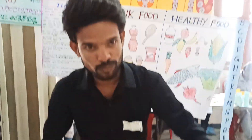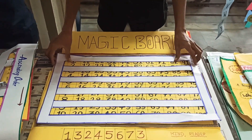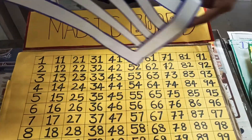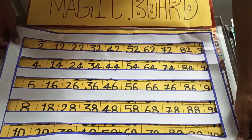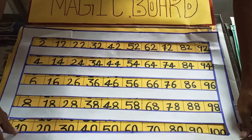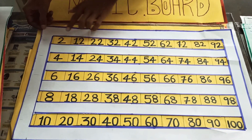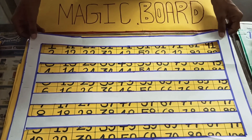Sir, it is a magic board. In this we have 1 to 100 numbers. If we see, those are even numbers. These are odd numbers.